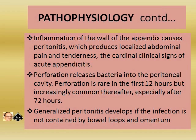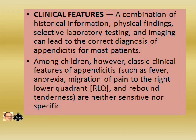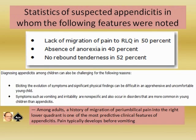Perforation releases bacteria into the peritoneal cavity. Perforation is rare in the first 12 hours but increasingly common thereafter, especially after 72 to 78 hours. Delay in diagnosis is therefore dangerous. Generalized peritonitis develops if the infection is not contained by bowel loops and omentum. A combination of history, physical examination, selected laboratory testing, and imaging can help arrive at a correct diagnosis. Among children, classic features such as fever, anorexia, migration of pain to the right lower quadrant, and rebound tenderness are neither sensitive nor specific. Lack of pain migration occurs in 50%, absence of anorexia in 40%, and no rebound tenderness in 52% of cases.